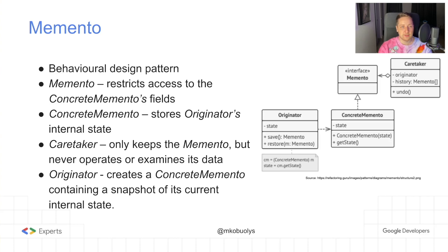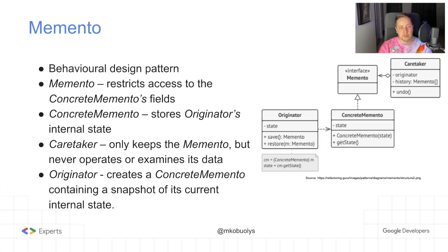Here are the responsibilities of each class in this design pattern. The Memento interface restricts access to the concrete Memento's fields and only declares methods related to Memento's metadata. The concrete Memento stores the originator's internal state and protects against access by objects other than the originator that created it. The caretaker only keeps the Memento but never operates or examines its data. The originator creates a concrete Memento containing a snapshot of its current internal state and provides a restore method to restore the internal state using the concrete Memento. To sum up: the originator creates the snapshot, the caretaker stores it, and when we want to restore, the originator handles that — no other class has access to the backup.